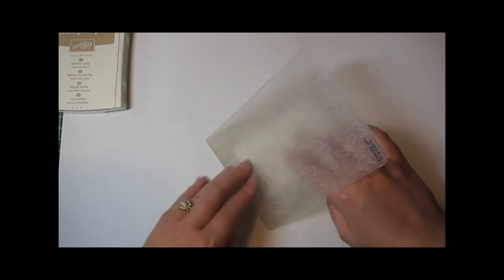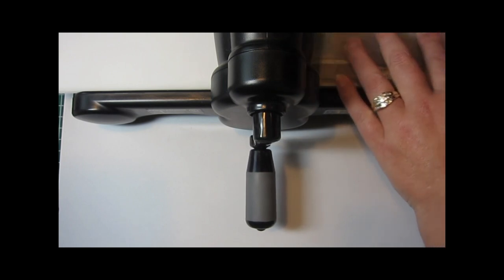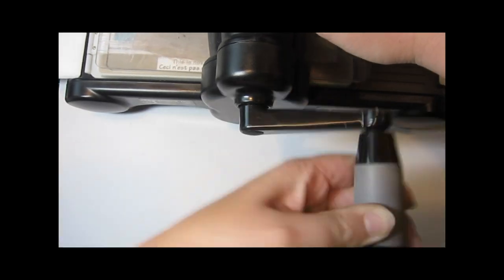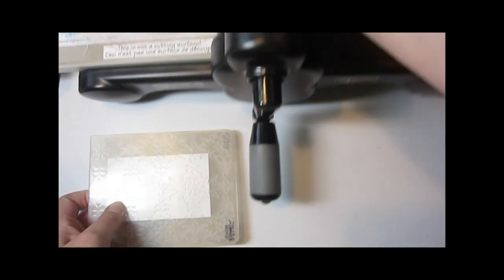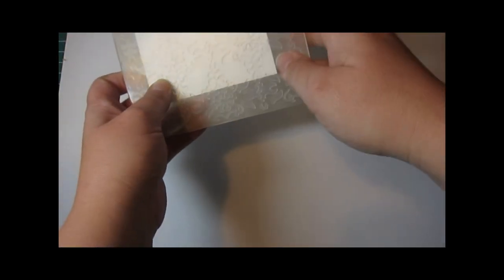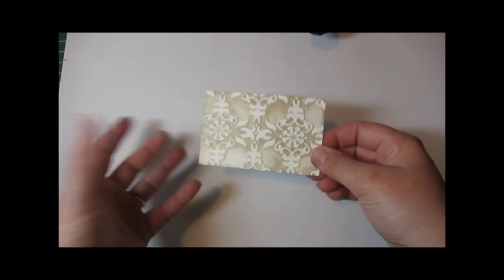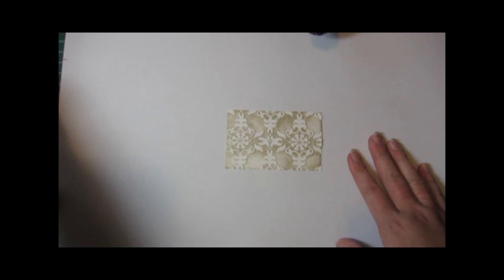Lay your cardstock piece on there, sandwich it together, and then we're going to run it through our Big Shot. Okay, and then when we open it up we actually see a piece that kind of looks like ceramic bisque to me. I really like it just how it is, but we're going to make it even more beautiful.